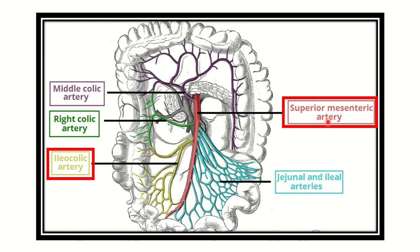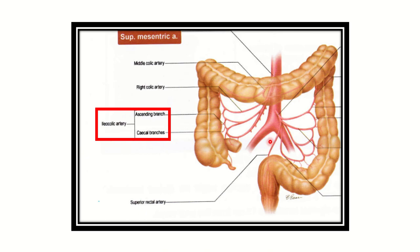In this picture we can see the ileocolic artery, and if we go back we can see it arises from the superior mesenteric artery. This large vessel is the abdominal aorta. So from the abdominal aorta, the superior mesenteric artery arises first, and from the superior mesenteric artery the ileocolic artery arises.